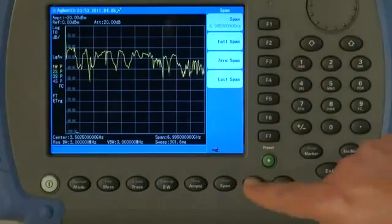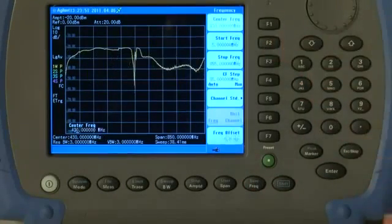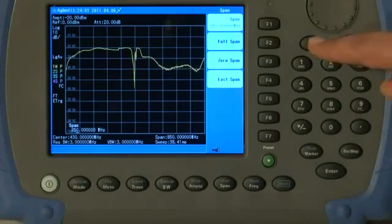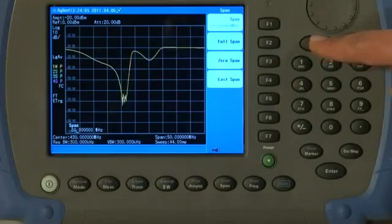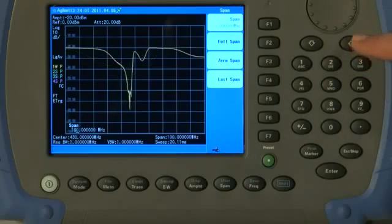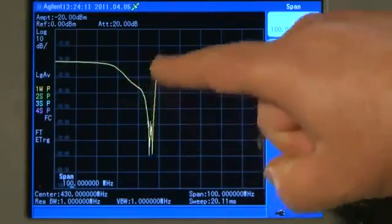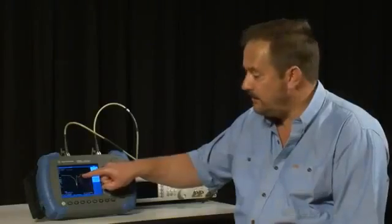So let us set a center frequency of, say, 430 MHz, and then I will press the span button. And using the arrow keys, I will just zoom in, and we can look at some of the detail here of the filter. We can see that it is a notch filter, and there is supposed to be a pass band here. One of the cavities of the filter looks like it is not lined up properly.